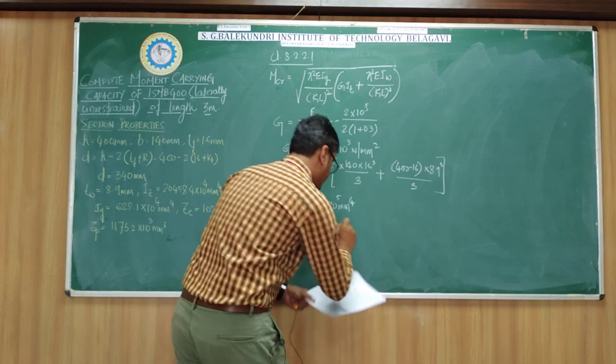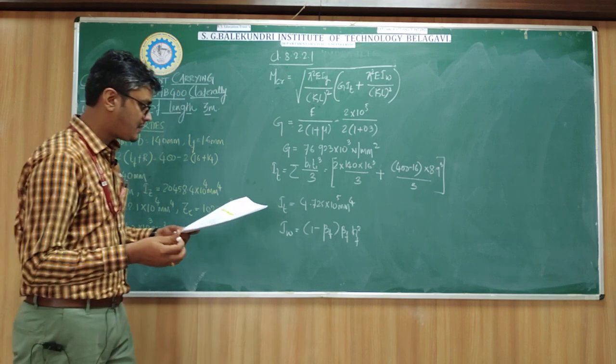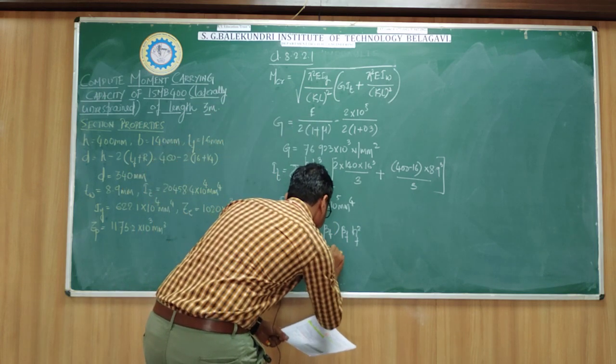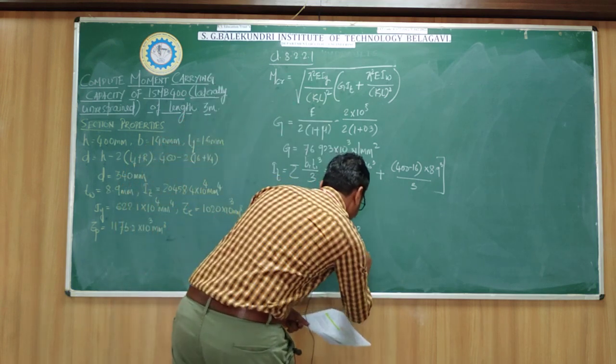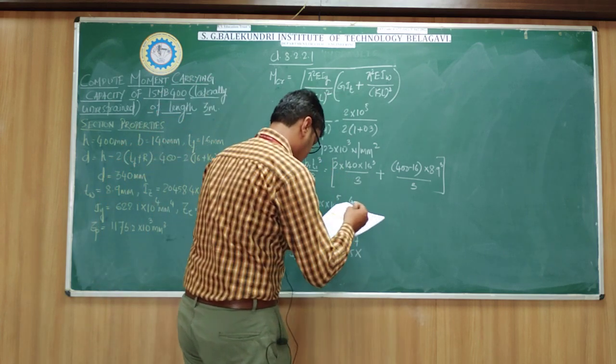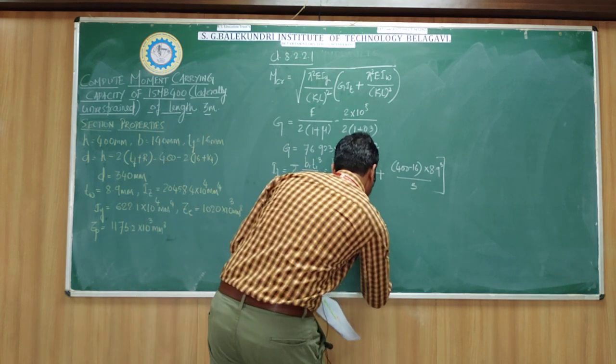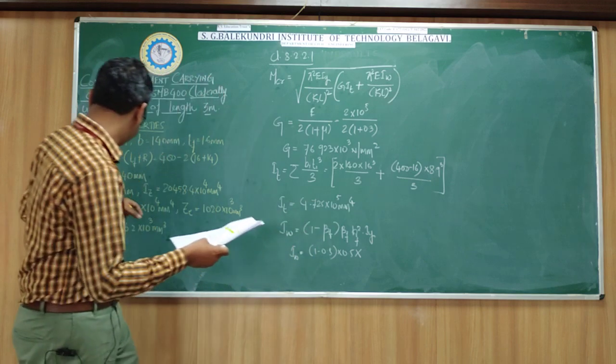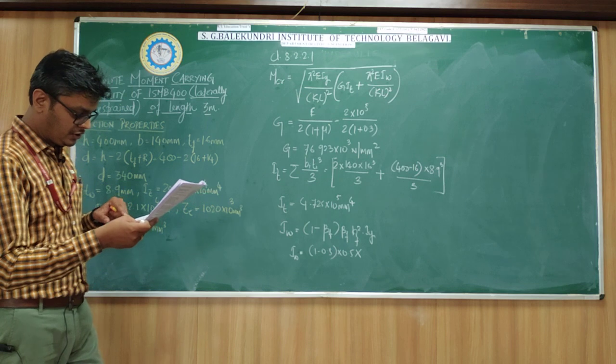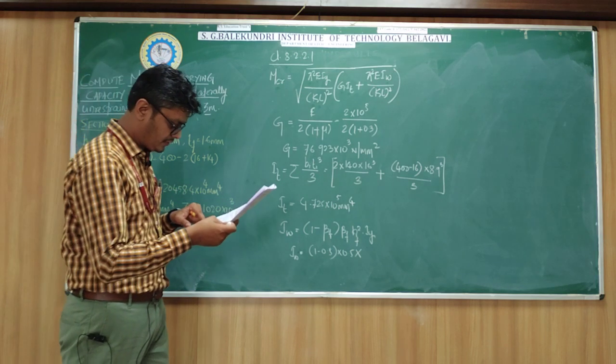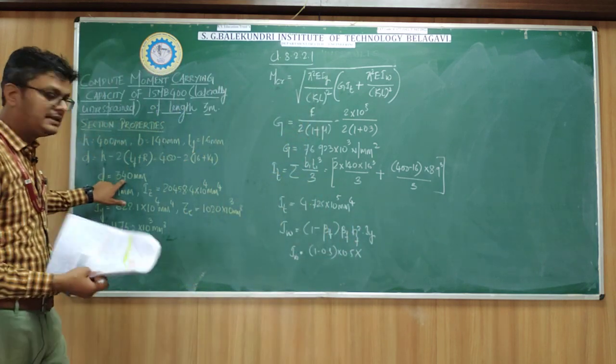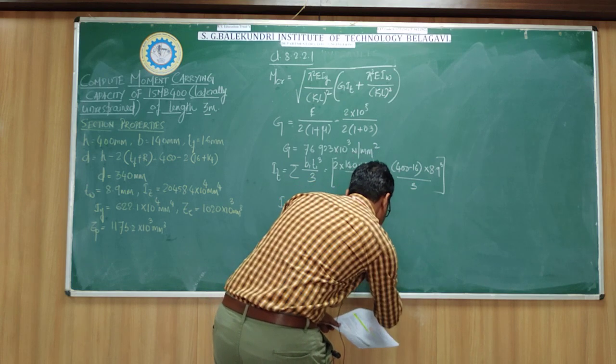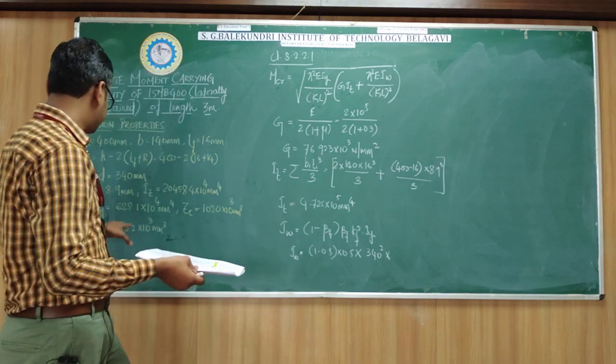Iw is the warping constant. This is given by the formula: Iy × h²f [1 - 0.5βf(hf²/d²)]. We usually take βf as 0.5. So this will be 1 - 0.5 × 0.5 × (384²/340²), where Iy is 622.1×10⁴.